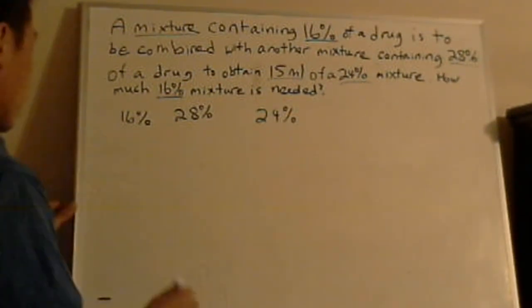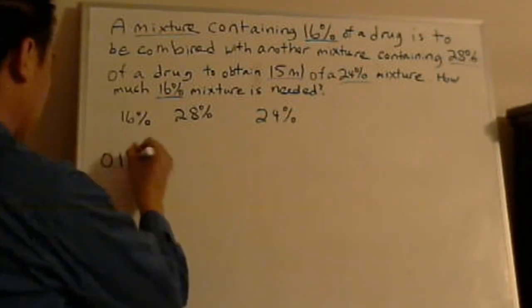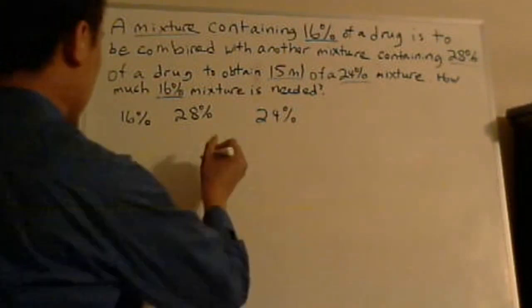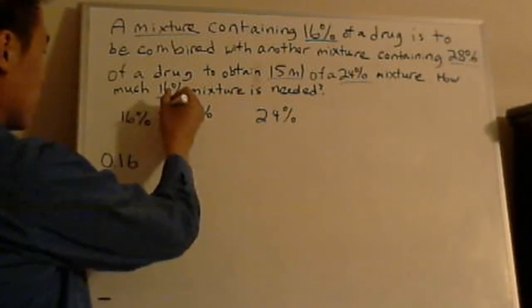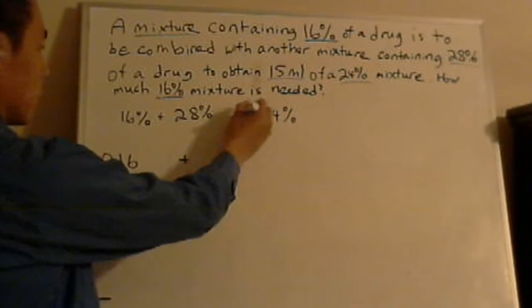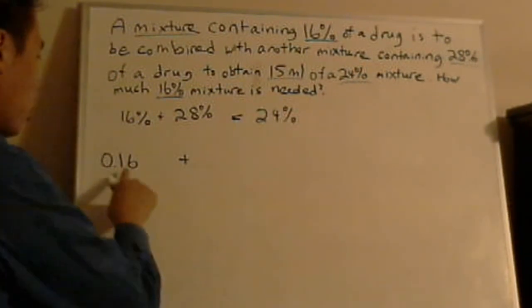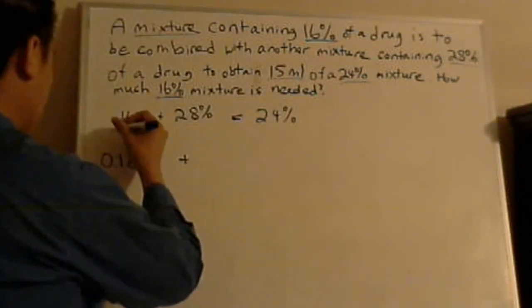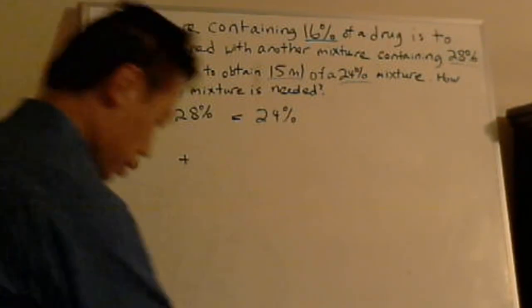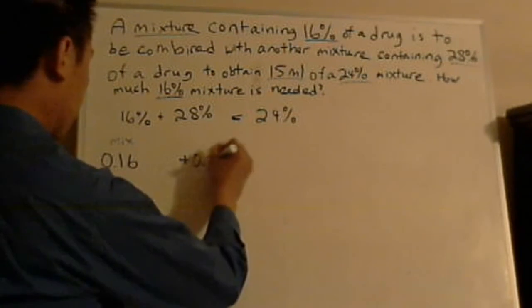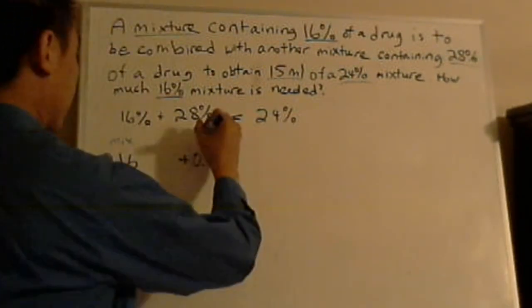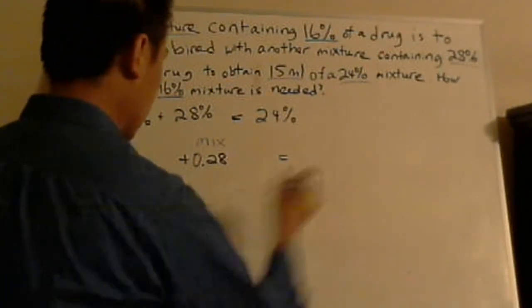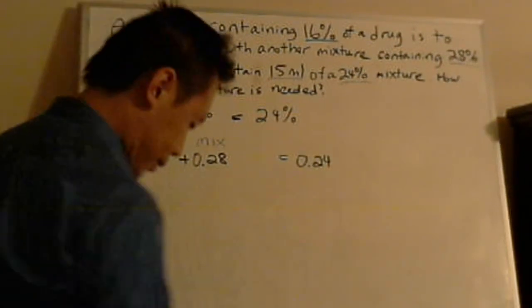So let's do the 16% first. So 16%, we know for sure, of some kind of drug, which is 0.16. 28% will be plus—I just want to put a plus here, because something plus something is going to get equal to some kind of 24% mixture. I'm kind of doing it little by little. So 0.16, let me do this. I'll put this as a mix. And we have 0.28, and that's another mix, right? A certain kind of mix. Equals to a 0.24 kind of mix.